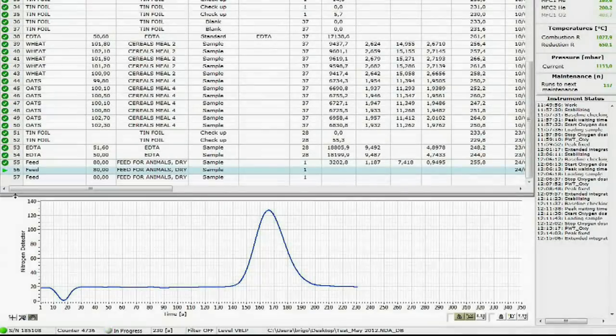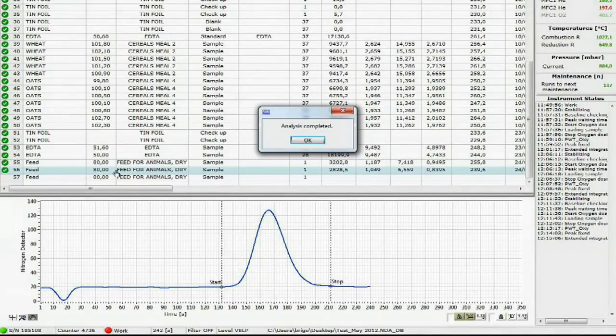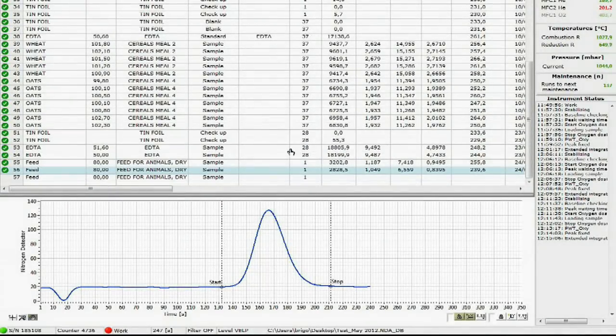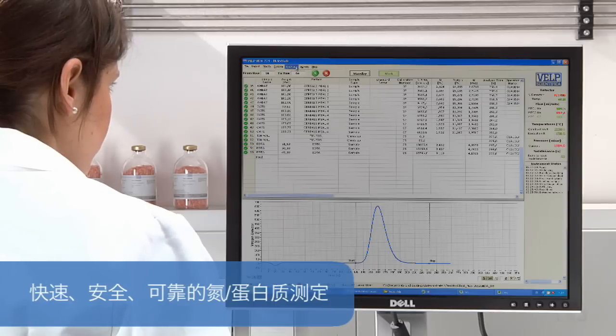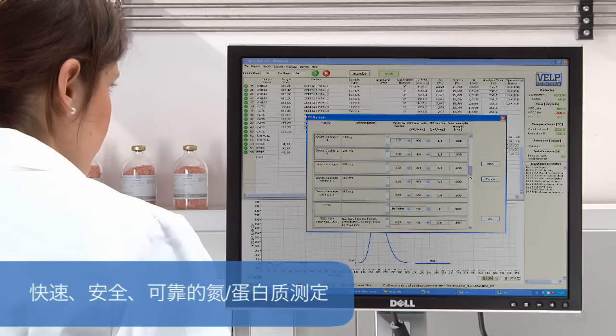To increase precision and accuracy, all gases are tested. The NDA 701 has no requirement for hazardous chemicals, providing fast, safe, and proven nitrogen and protein determination.